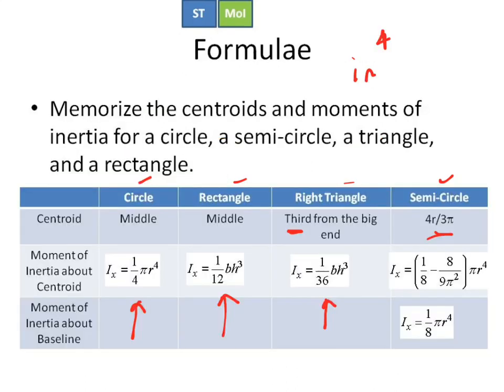The only one that you might want to choose to remember about the baseline is the semicircle because then it's half of the circle, which is kind of convenient, but then you have to say Ix about the baseline minus Ad squared to get this, where d is now 4 over 3 pi.